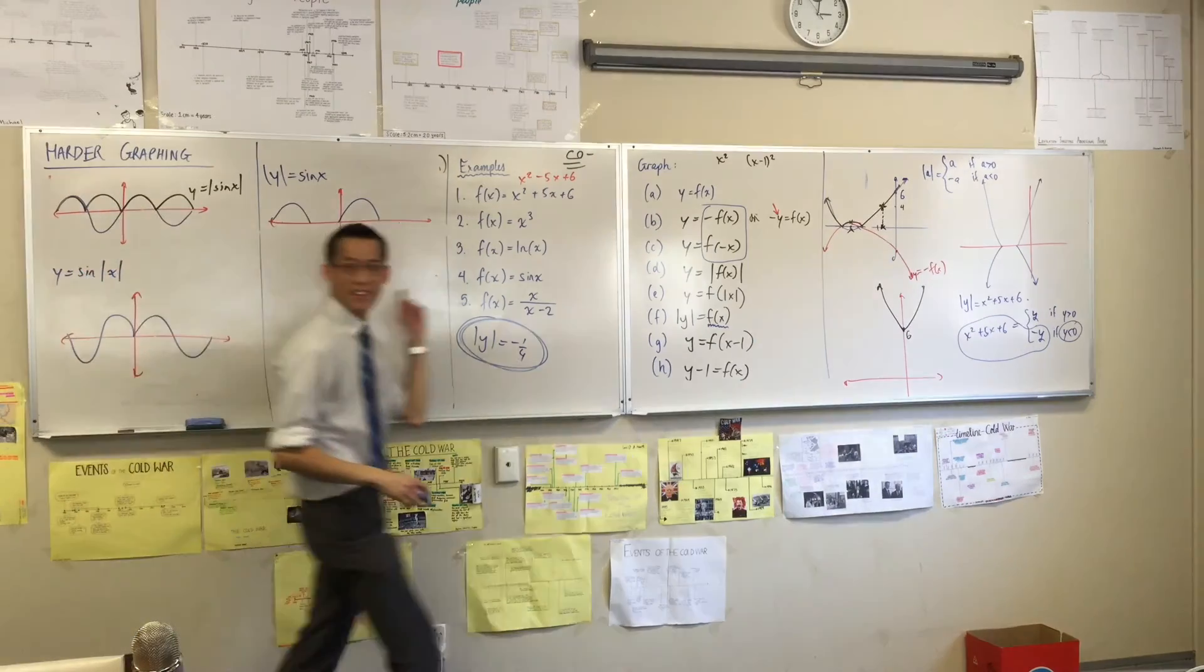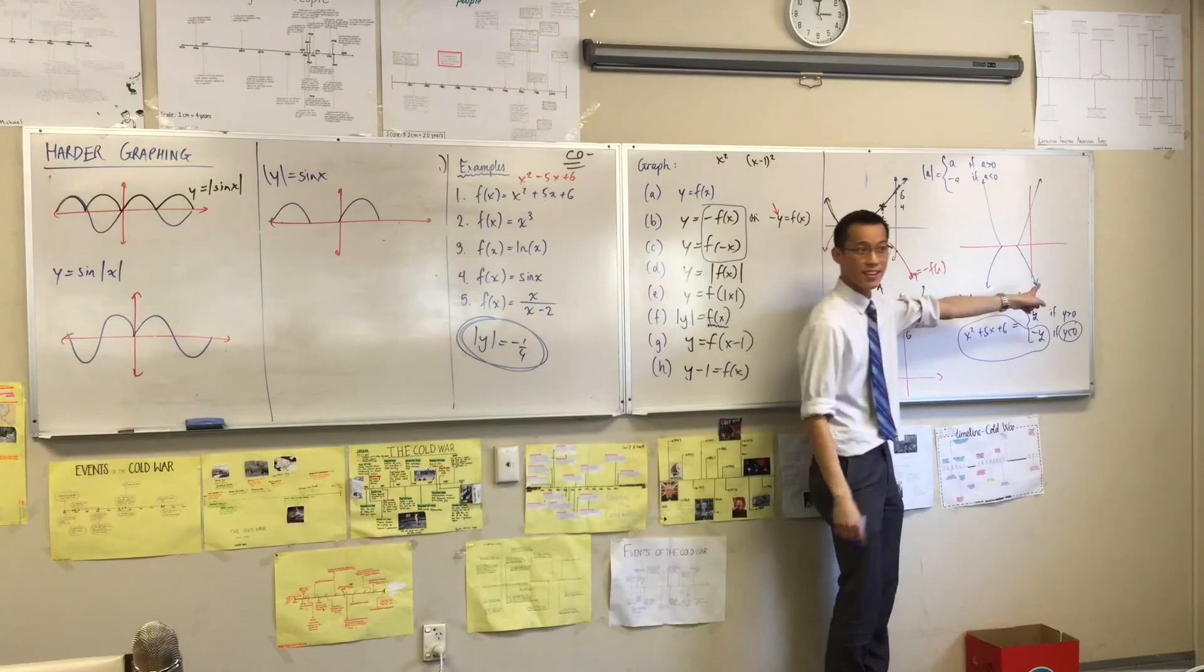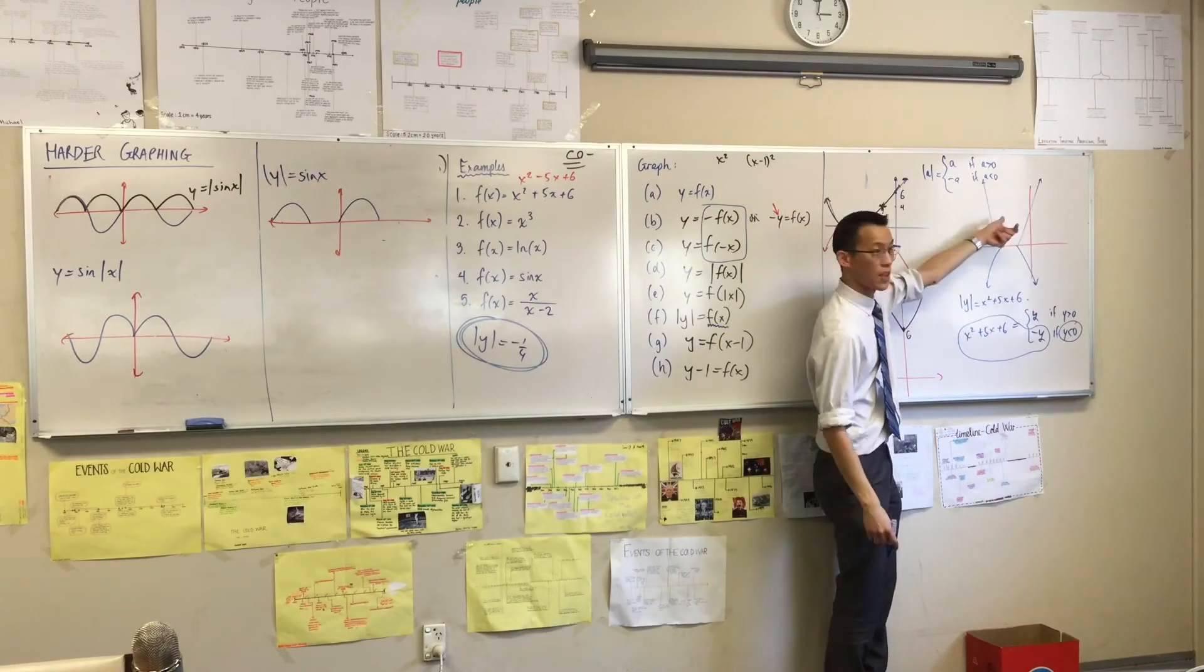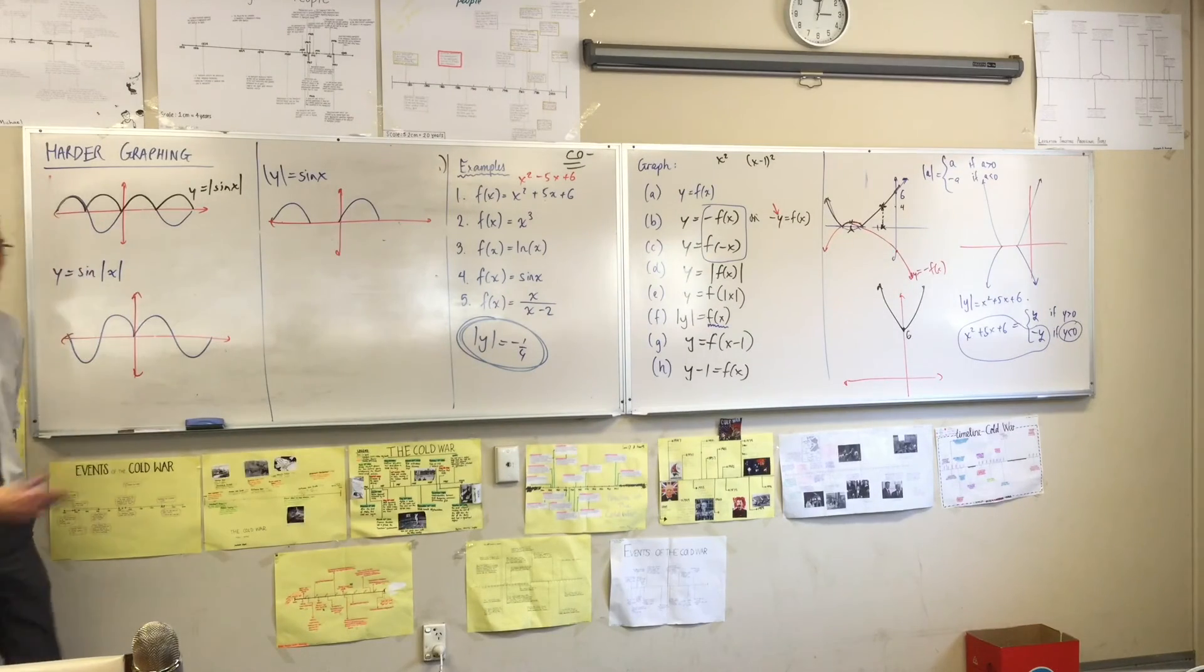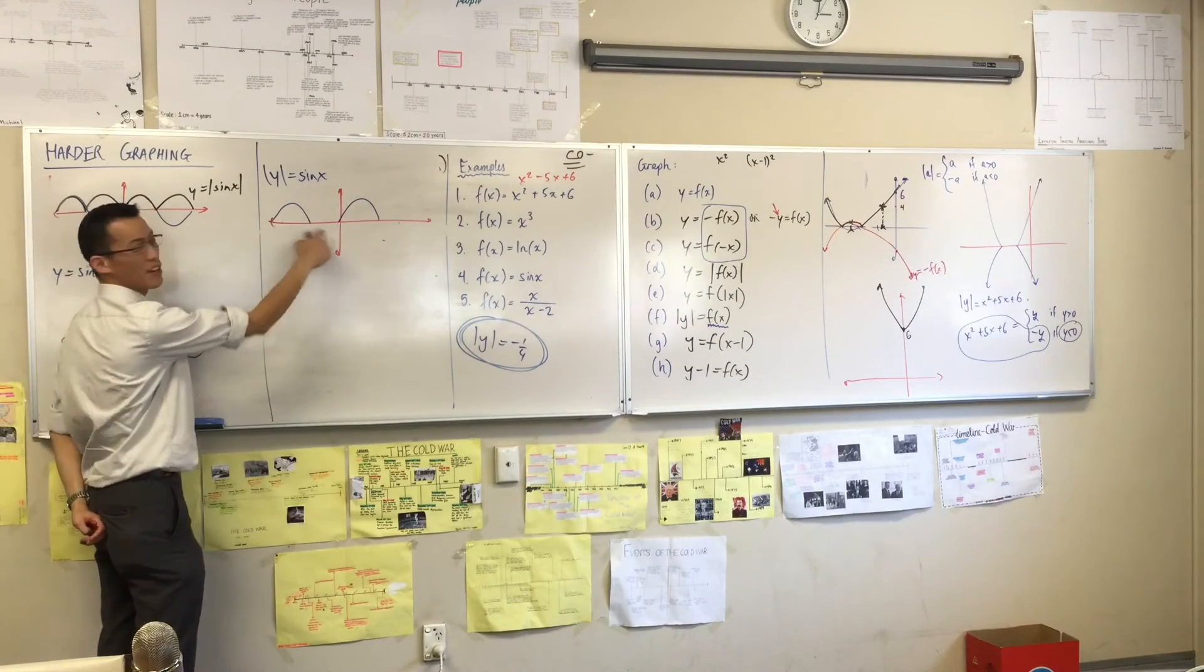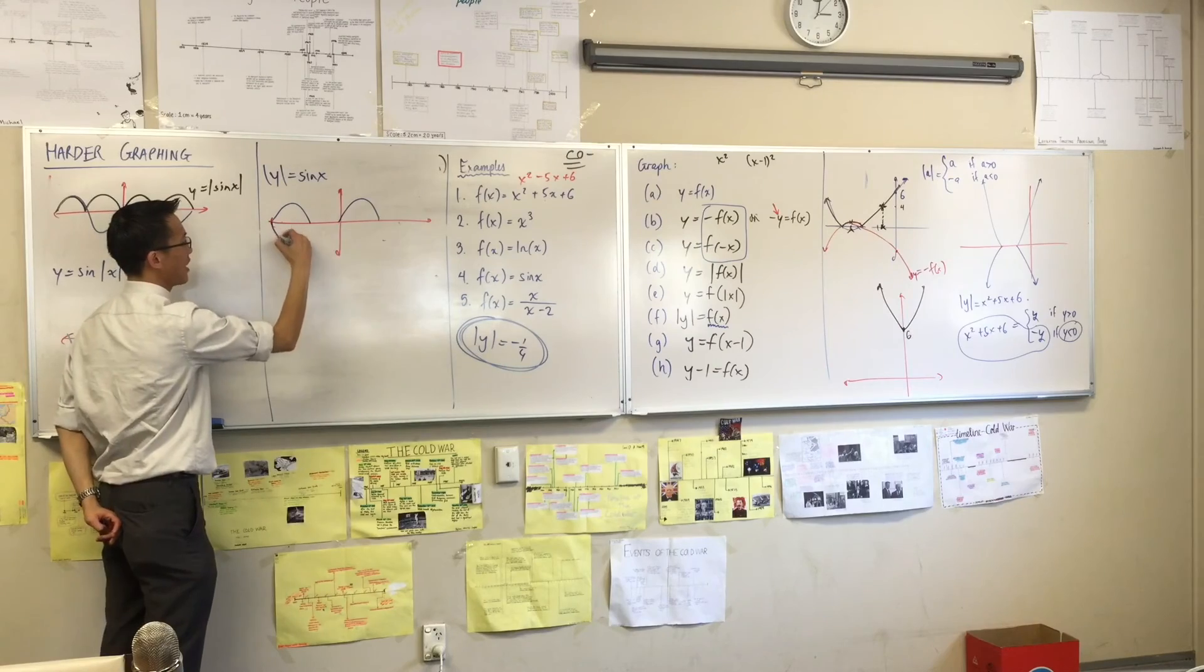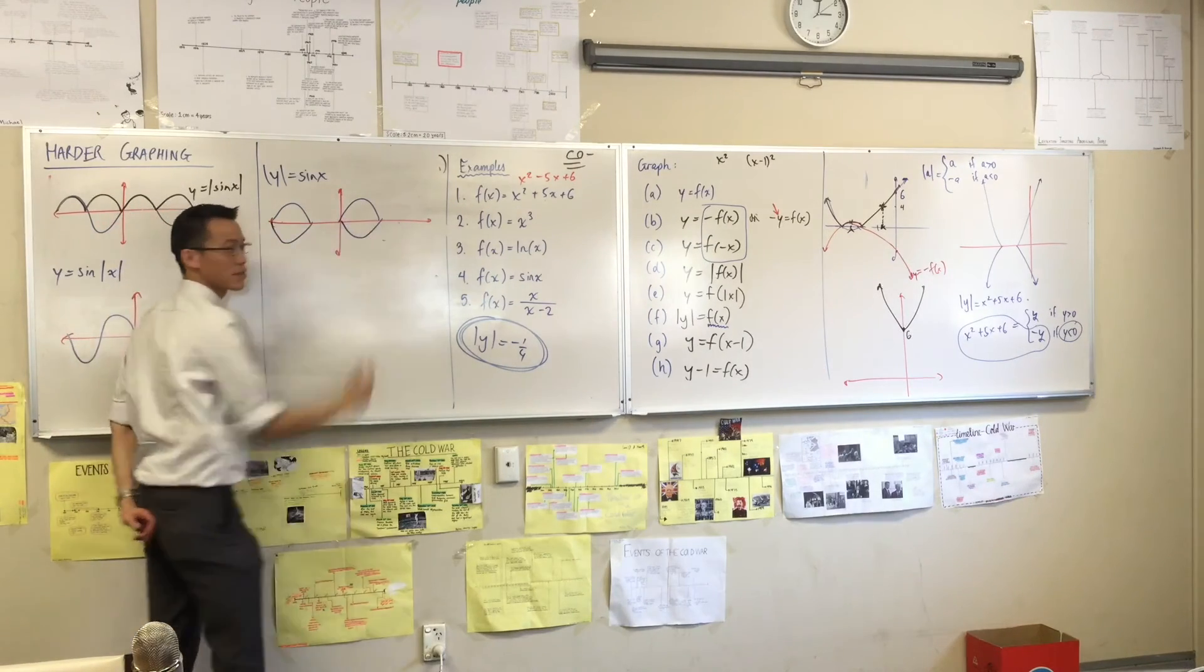But that's only one half, right? Do you remember what happened when we did it here? You're going to get a reflection. You're going to get, well, not quite, because these are not vertical, are they? So you're going to get these kinds of shapes, like that.